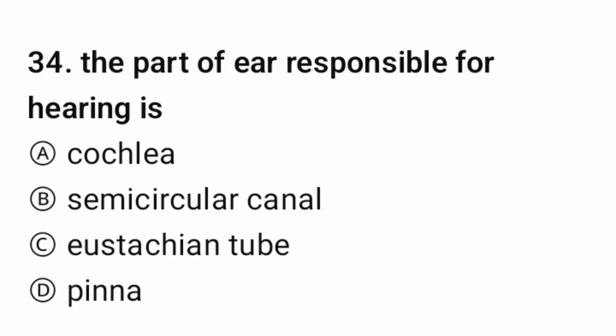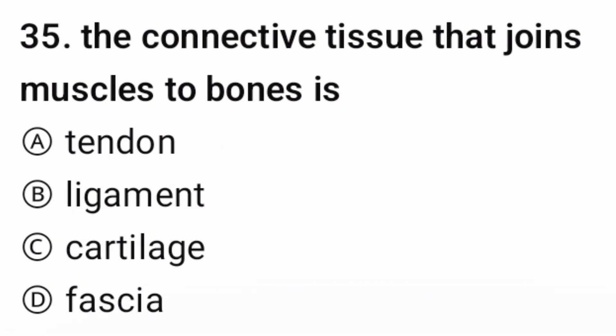Question 33: The smallest unit of life is — the correct option is C. Question 34: The part of your ear responsible for hearing is — the correct option is C. Question 35: The connective tissue that joins muscles to bones is — correct option is A (tendon).